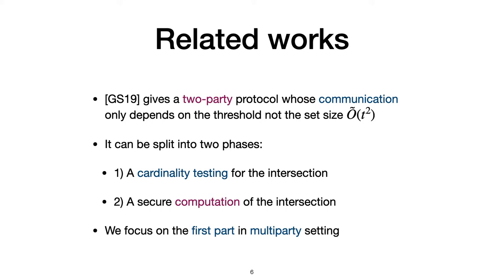Here are related works for threshold PSI. Gauch and Simkin in Crypto 2019 gave the first two-party threshold PSI protocol, which communication only depends on the threshold instead of the set size. Generally, in high level, their protocol can be divided into two phases or two parts. The first part is a cardinality test step. The second one is an intersection computation step. The second part can be extended to multi-party easily. So we only focus on the first step in this talk. That is, a cardinality test for multi-party.